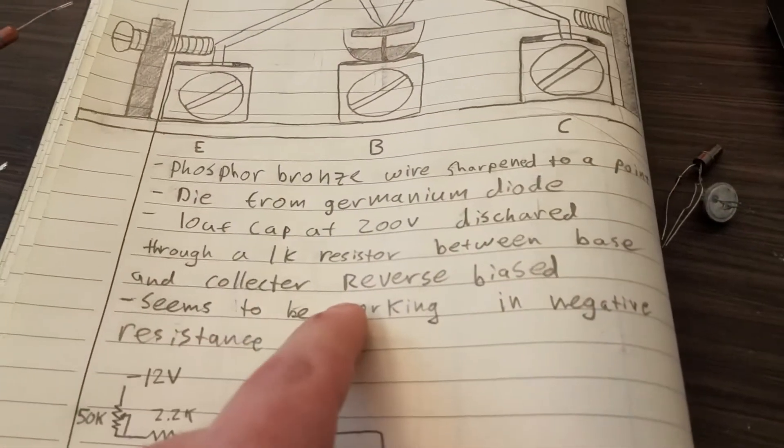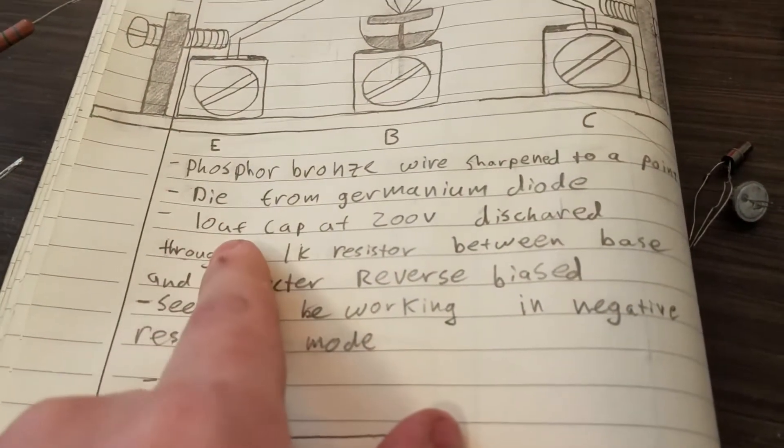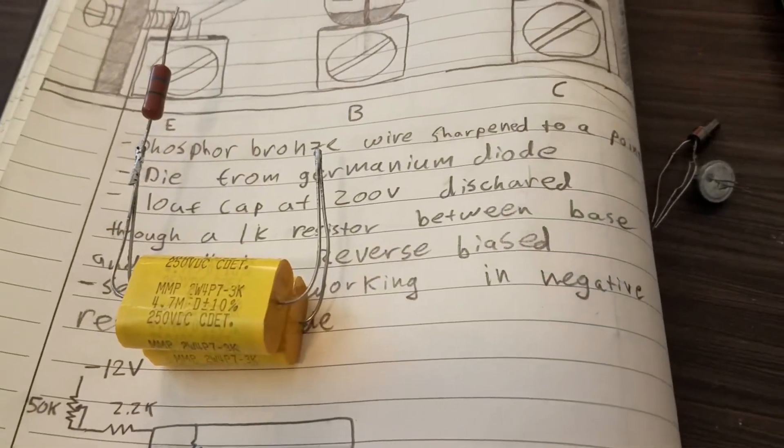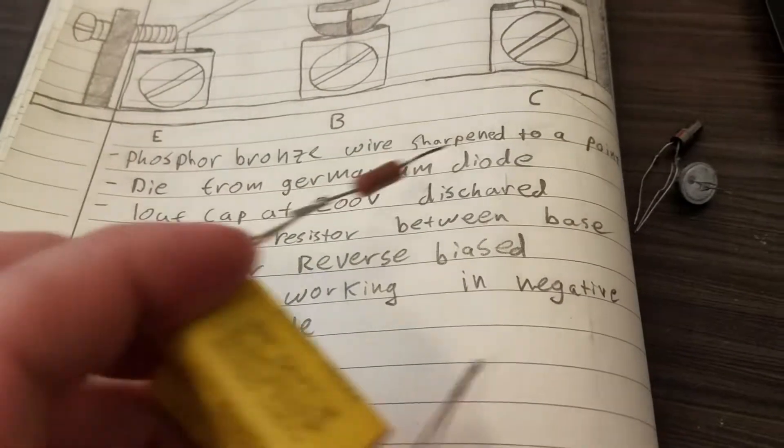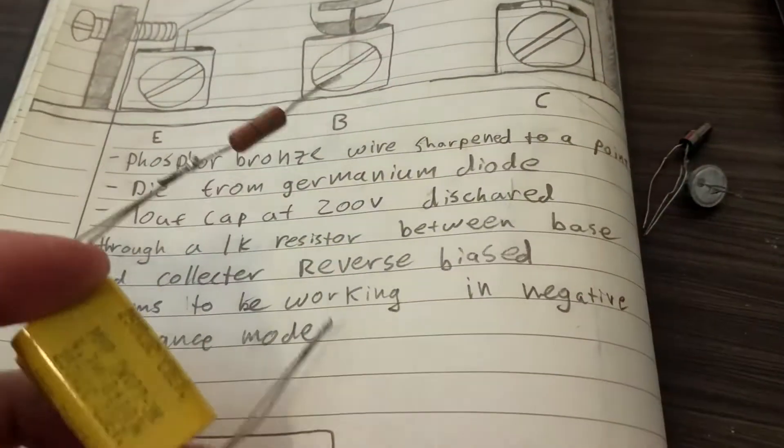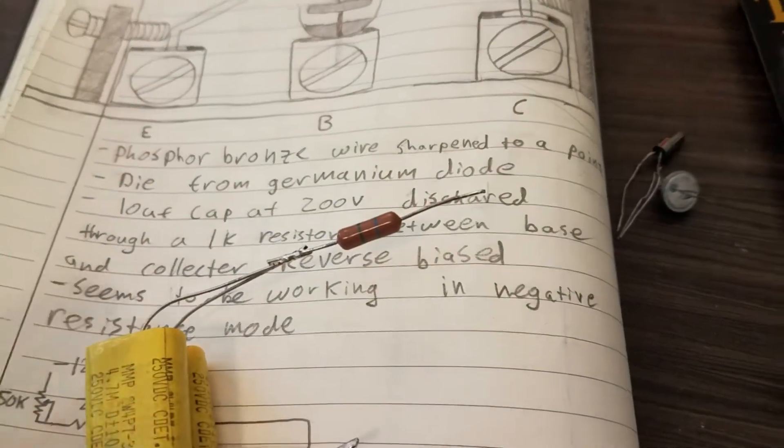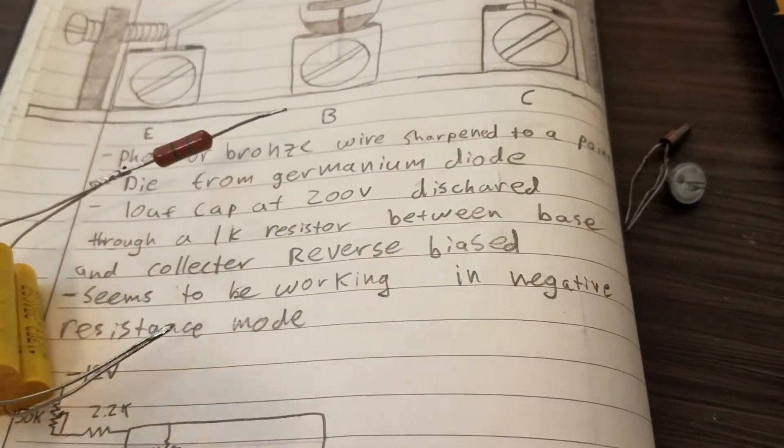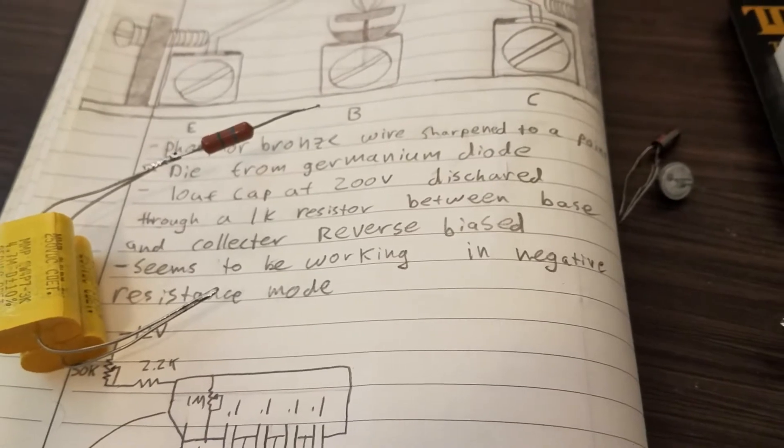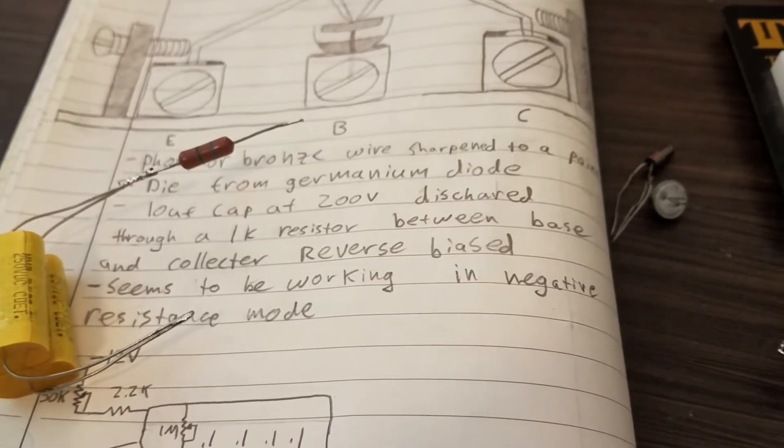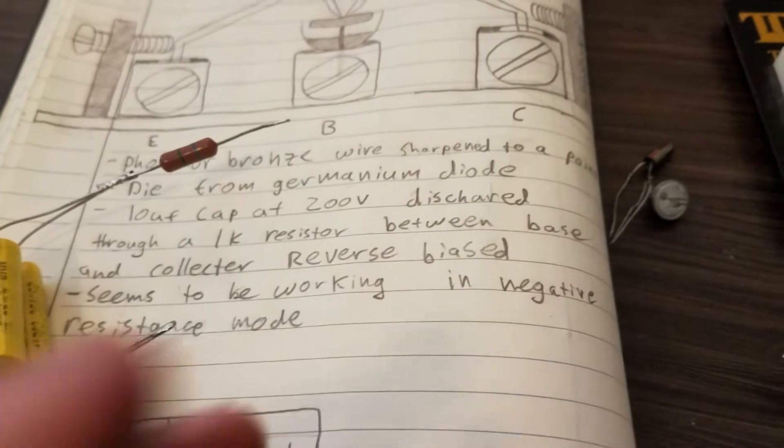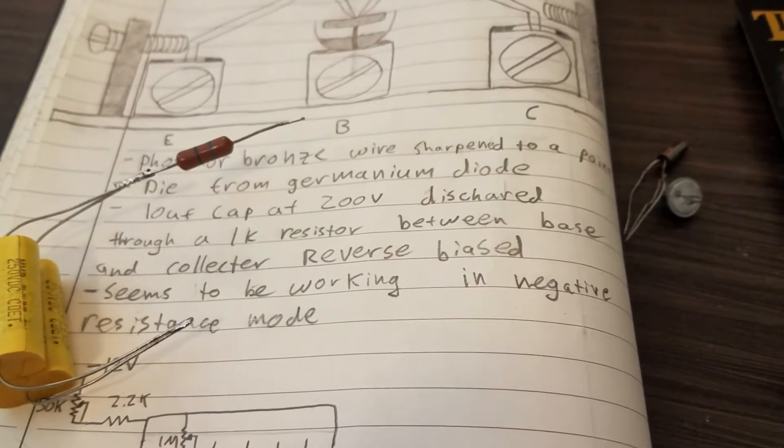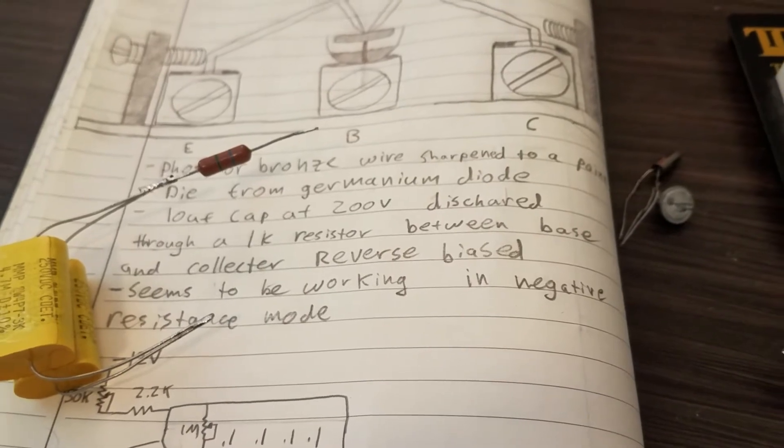So right now what I'm using for the forming is a 10 microfarad cap charged to 200 volts and discharged between the base and the collector through a 1k resistor. And I'm doing that reverse biased right now. I've seen conflicting notes on which way you should do it. I found an old paper from Bell Laboratories that said it should be done reverse biased. But if you watch Jeri Ellsworth's video she does it forward biased so I'm not quite sure who's right there.